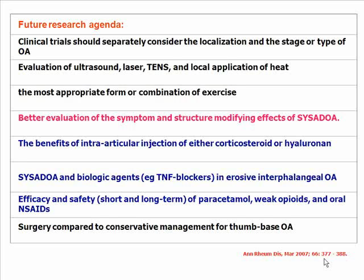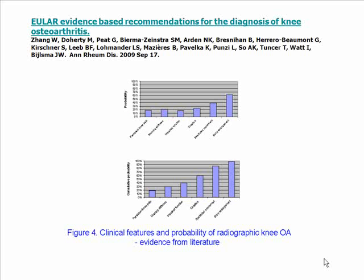Most recently, in September, the task force published evidence-based recommendations for the diagnosis of knee OA in the EULAR journal, the Annals of Rheumatic Diseases. This is the diagnostic criteria list, and the combination of all those symptoms gives a 100% probability that the patient is suffering from knee osteoarthritis.